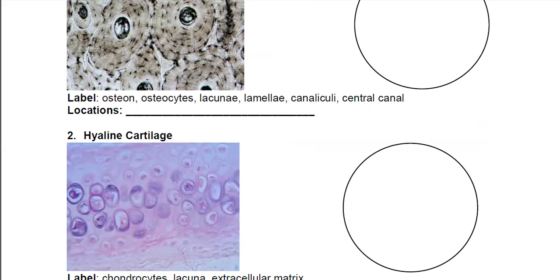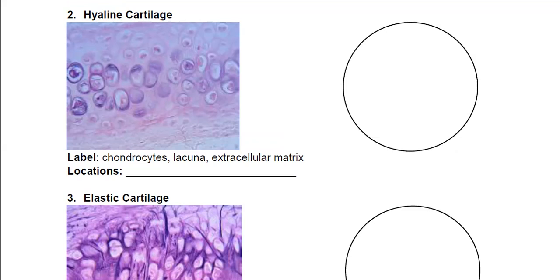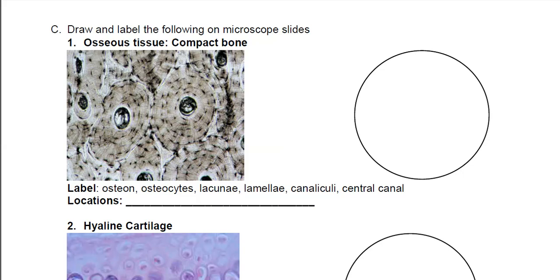Next we have some slides of compact bone and a couple of cartilage slides. Now we know a little bit more what we're looking at. This is compact bone. The circular unit is the osteon. The black dots are the lacuna, in which the osteocytes live — the lacuna is the little pocket the osteocytes live in. The lamella are the rings running around like tree rings. The canaliculi are the lines that radiate out from the center. The central canal is the large hole in the center.